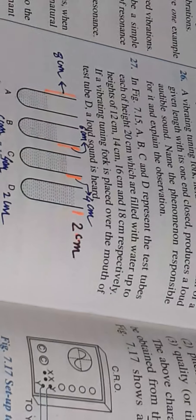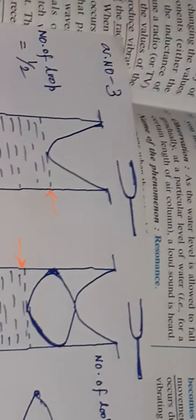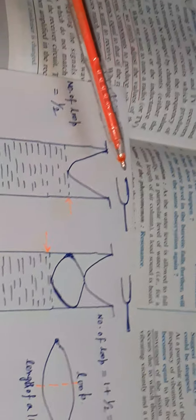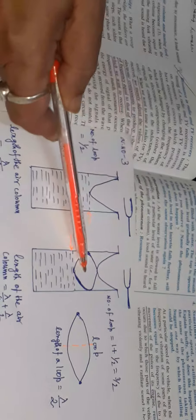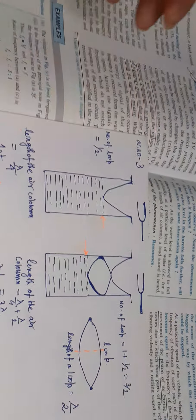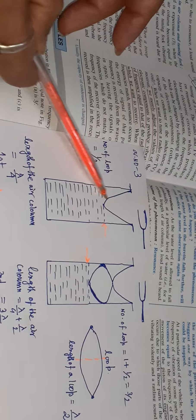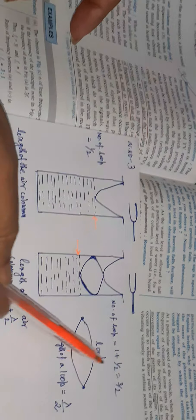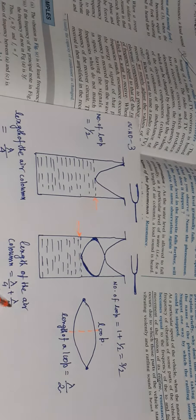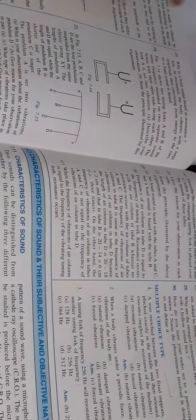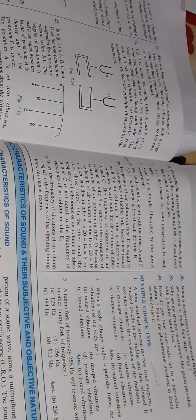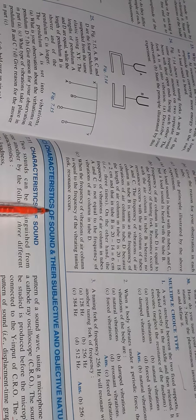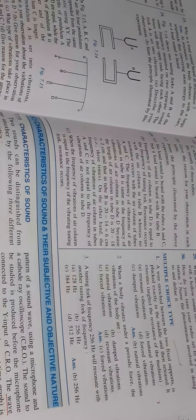Let us see the answer. We need to know the number of loops of the standing wave. The number of loops is 3 by 2. The length of each air column is lambda by 4 for the first resonance, and lambda by 2 plus lambda by 4 for the second resonance. This relates to the chapter on sound.